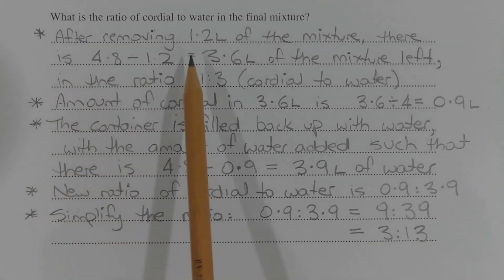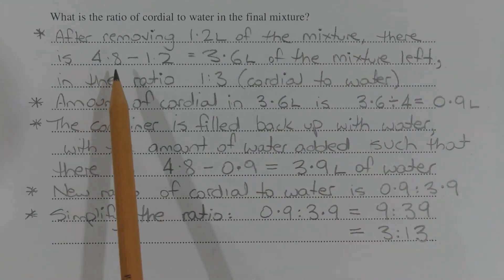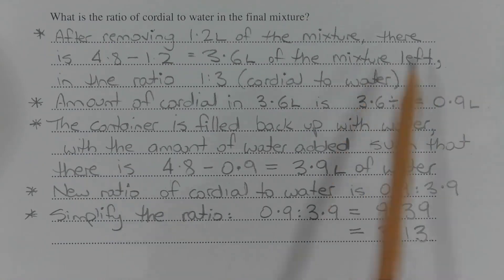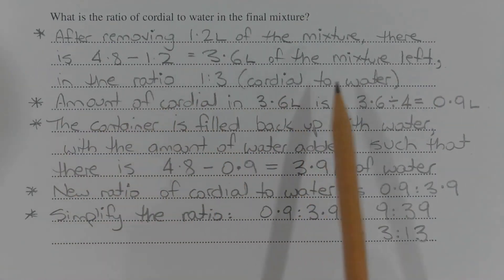After removing 1.2 litres of the mixture, there is 4.8 minus 1.2, which equals 3.6 litres of the mixture left, which is still in the ratio 1 to 3, cordial to water.